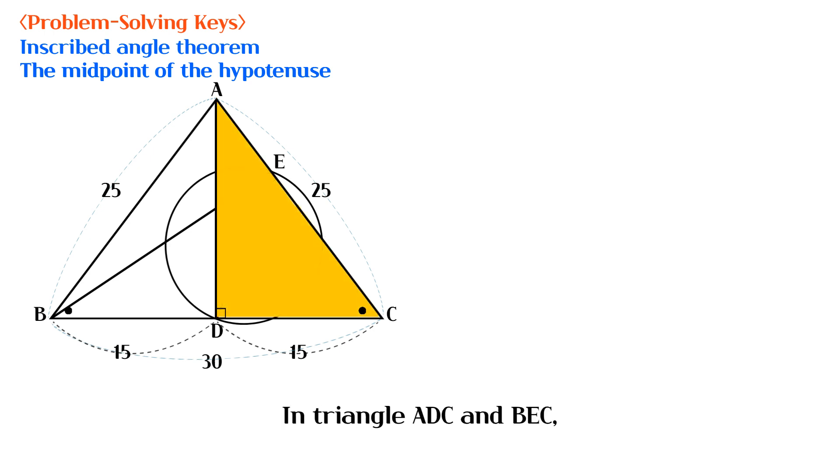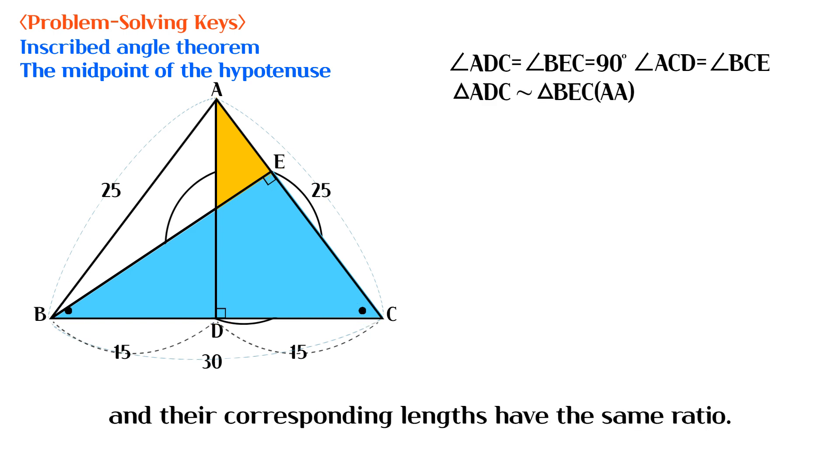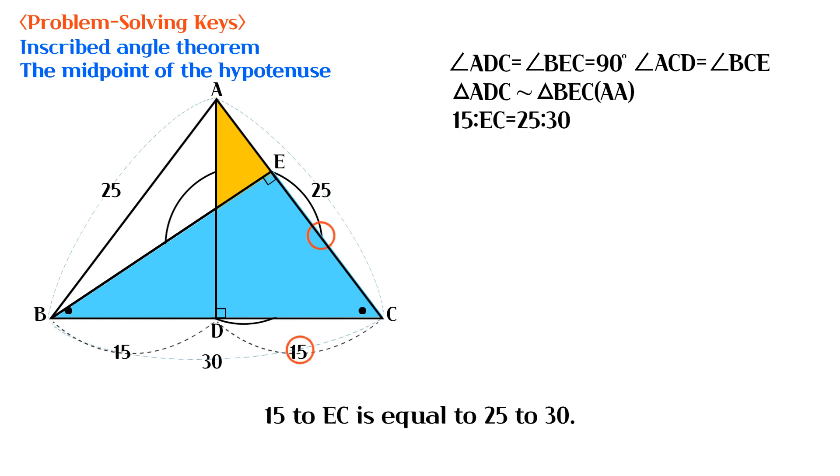In triangle ADC and BEC, the two corresponding angles are equal. So they must be similar triangles and their corresponding lengths have the same ratio. 15 to EC is equal to 25 to 30.